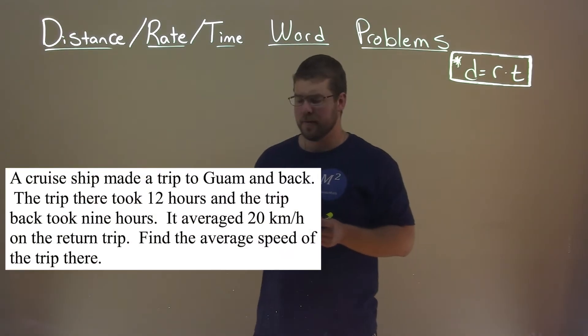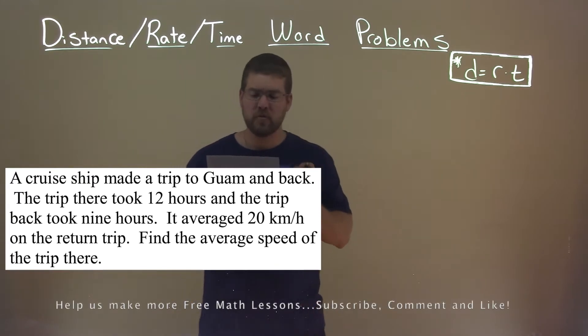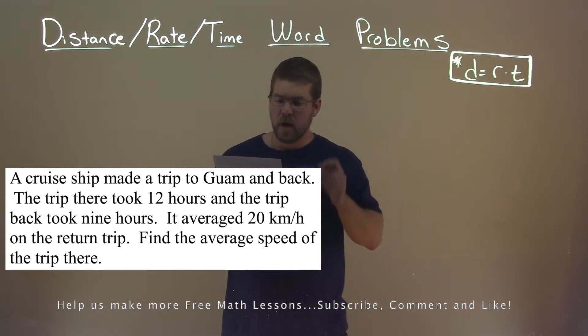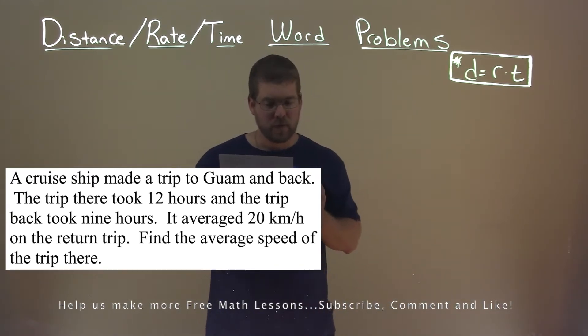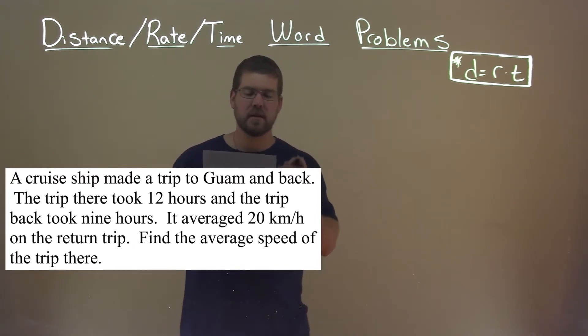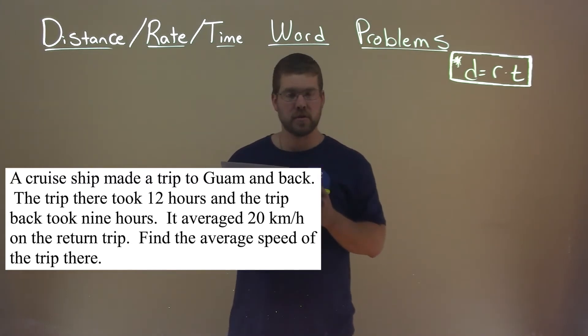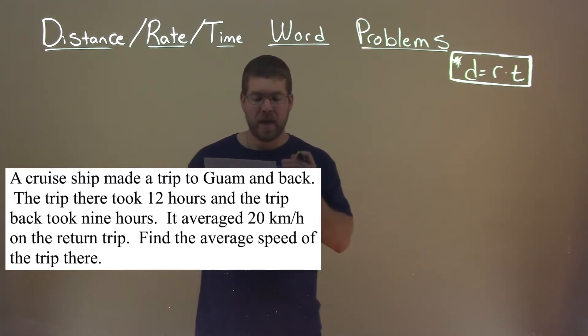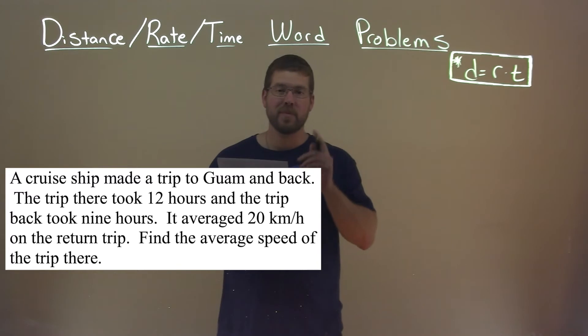We're given this problem right here. A cruise ship made a trip to Guam and back. The trip there took 12 hours, and the trip back took 9 hours. It averaged 20 kilometers per hour on the return trip. Find the average speed of the trip there.